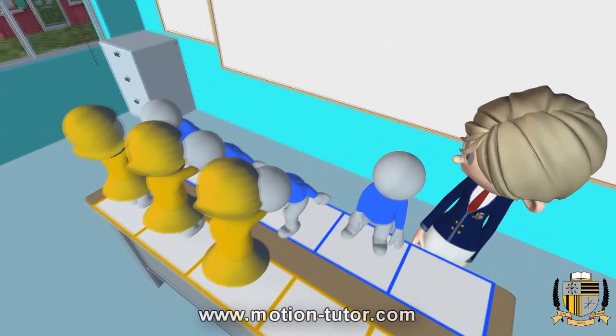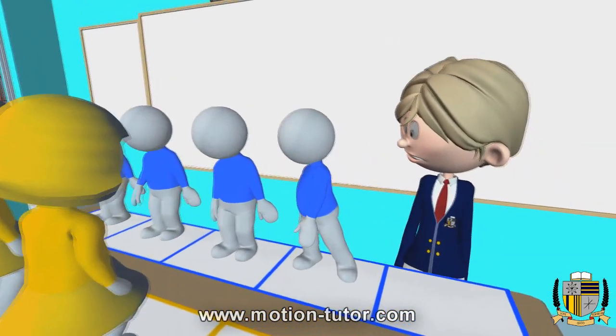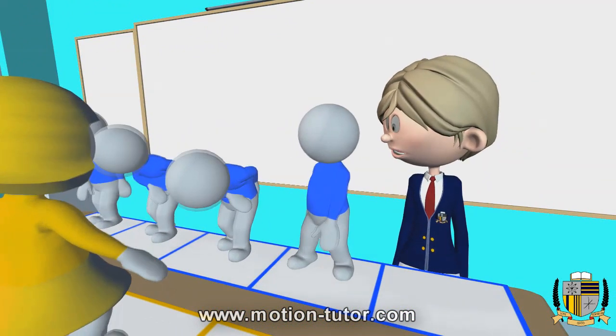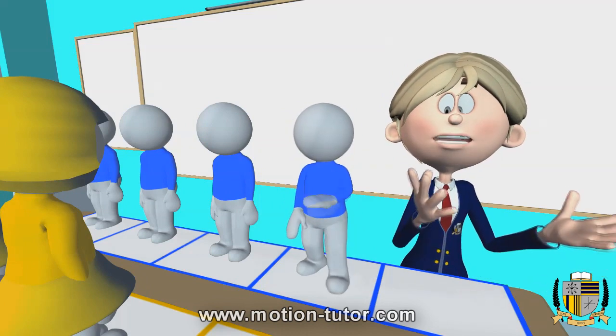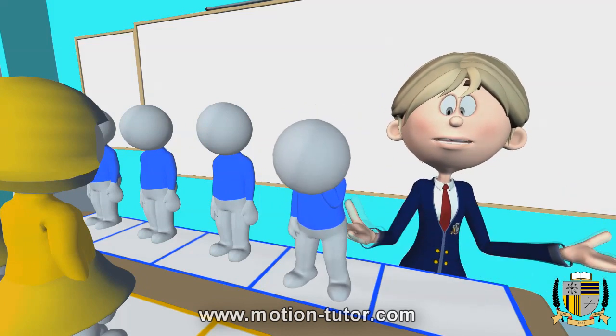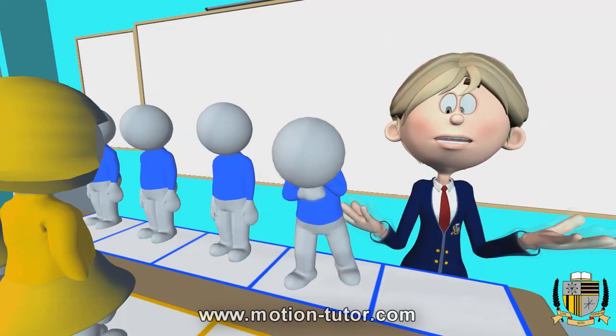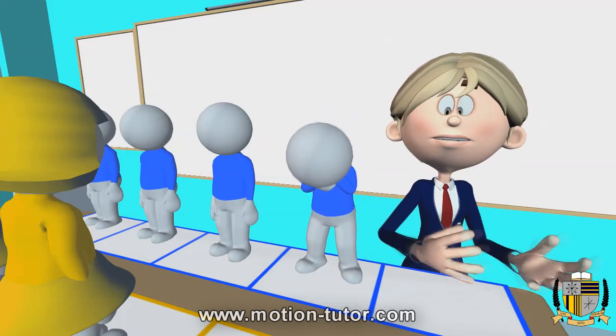Uh-oh, there is a boy standing with no girl to shake hands with. This is showing us that there are more boys than girls. So the number of boys is greater than the number of girls.